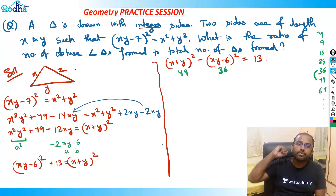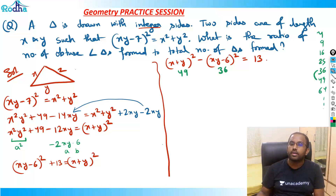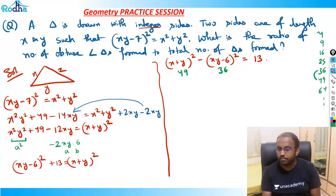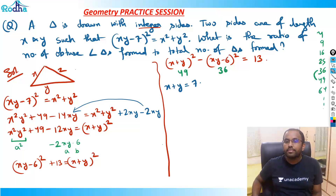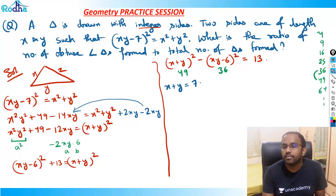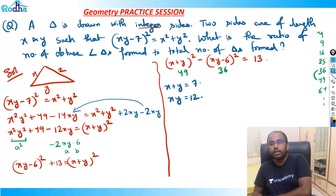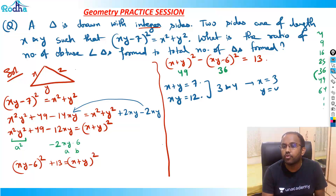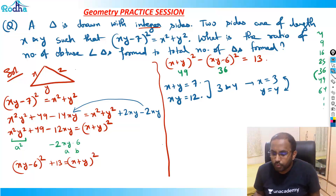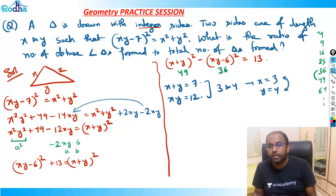So X + Y = 7 and XY - 6 = 6, which means XY = 12. Therefore X = 3 and Y = 4.